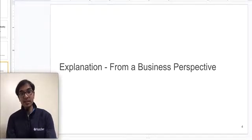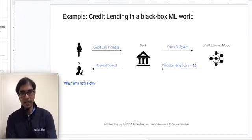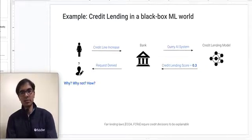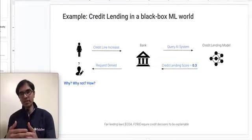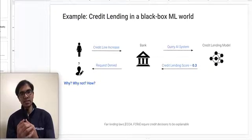There are actually several motivations for explainable AI. First, I'll discuss motivation from the business perspective. Imagine a user applying for a credit line increase to a bank, and this bank makes credit decisions using a black box machine learning model. The user applies, the bank consults the model, the model gives a credit lending score of 0.3 which is below the threshold, and so the bank denies the request. Now the user asks: why was this rejected? Why was my application denied? What can I do to have my application accepted?